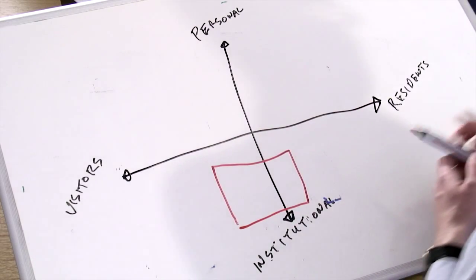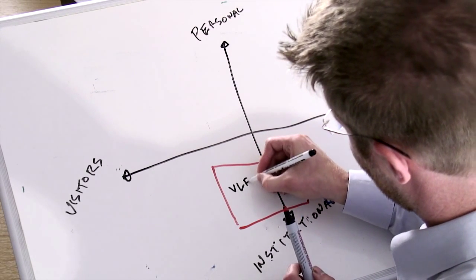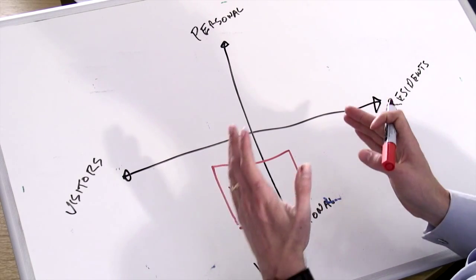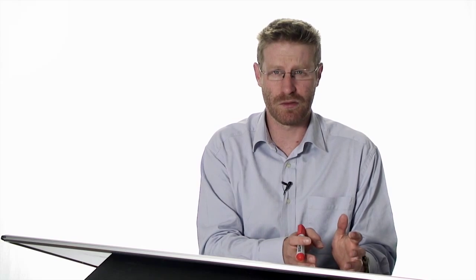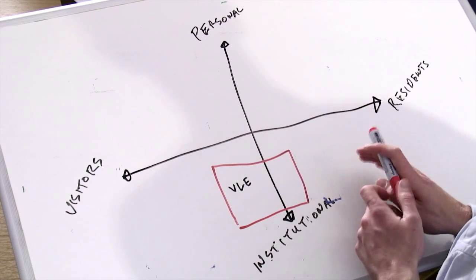Perhaps the first thing to map — what most people think about first when talking about e-learning in that traditional sense — would be the VLE. I've put this as being strictly institutional, which is probably not a surprise, but it overlaps between visitor mode and resident mode. The technology itself doesn't mandate a certain mode of engagement. When we get to virtual learning environments, it's very much down to our pedagogy, which changes those modes of engagement as much as the technology itself.